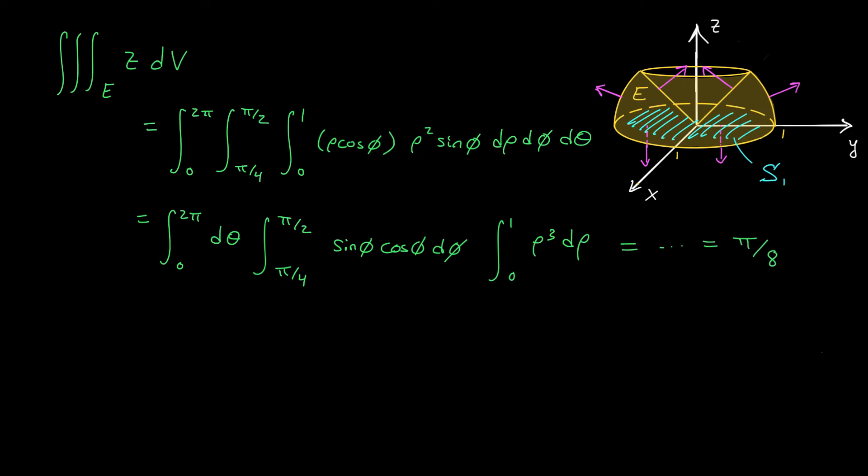Now that's the surface integral over the entire surface S₂. But we really don't want to include this bottom face S₁. The surface integral over S, the thing that we're actually looking for, is the surface integral over S₂ of f dot dS minus the surface integral over S₁ of f dot dS. We have to remove this extra part. So that's going to be π over 8 minus the surface integral over S₁ of f dot dS.